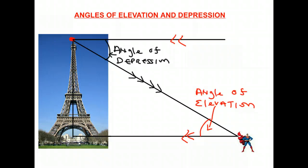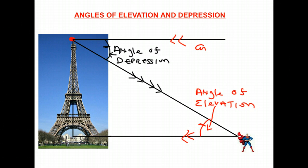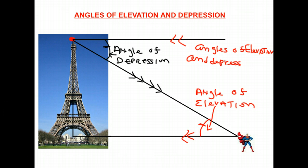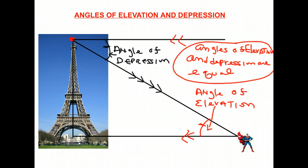You might remember that alternate interior angles of two parallel lines are equal. The angle of depression and the angle of elevation are the alternate interior angles in this diagram. So the angle up here and the angle down there — the angles of elevation and depression — are equal. This is important to remember when we get to modeling problems.